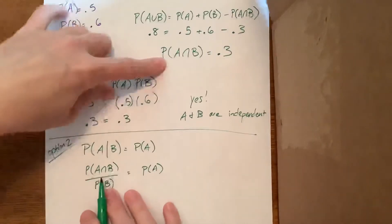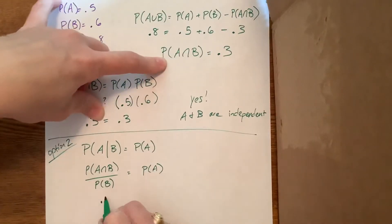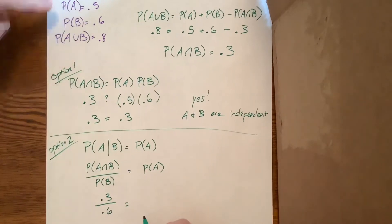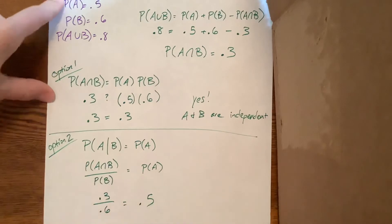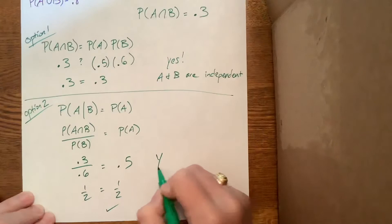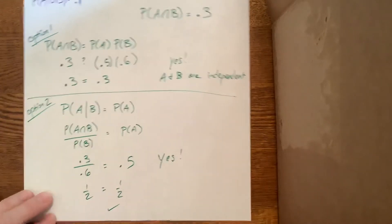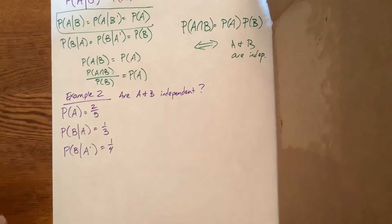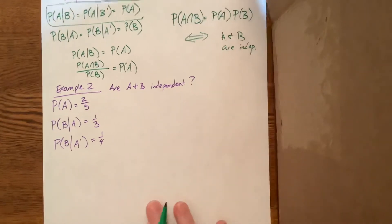Probability of A intersect B, we came back here, is 0.3. The probability of B is 0.6. The probability of A we said was 0.5. Sure enough, one-half is equal to one-half, and yes, they're still independent. This one right here is a little bit more complicated, if I remember correctly. We can keep going.